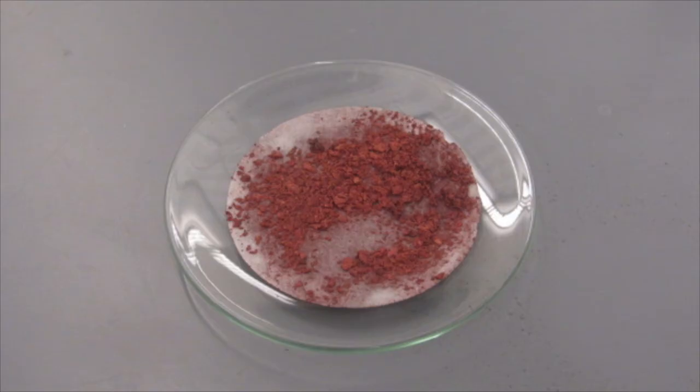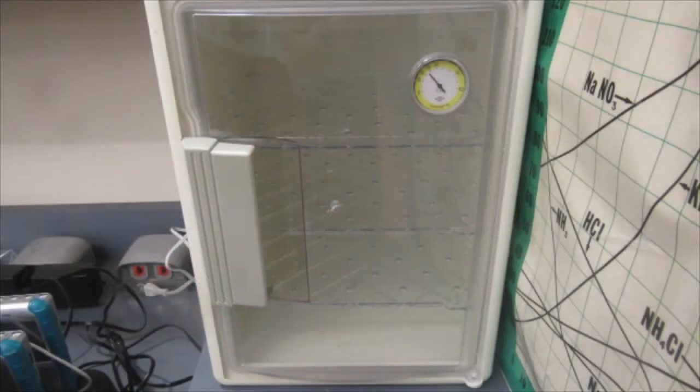In order to get all the water out of the copper so that when we weigh it, we get an accurate weight of copper, you can either place it in a desiccator, like we see here, and let it dry over a few days.